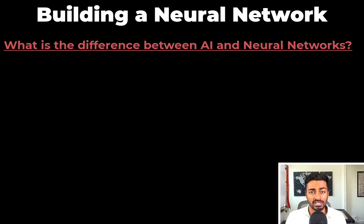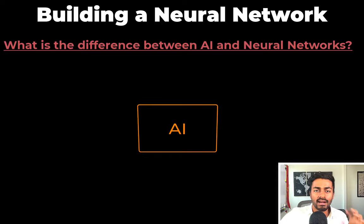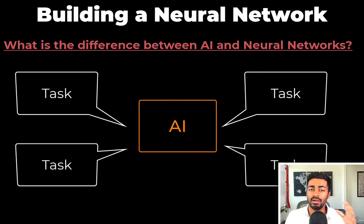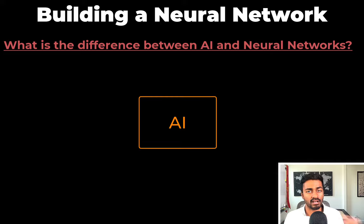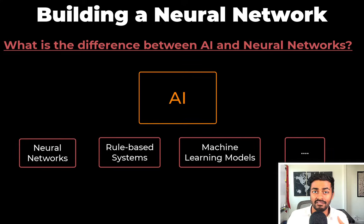What is the difference between AI and neural networks? AI is a system that can perform one or more tasks. And to solve these tasks, AI systems can be of different types. Neural networks are a type of AI system that was inspired by neurons in the brain.